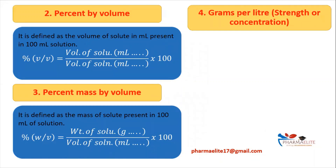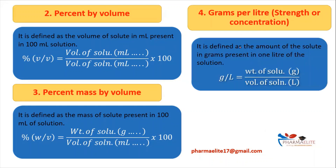The next term is gram per liter, also called strength or concentration of solution. It is defined as the amount of solute in grams present in one liter of solution. It is denoted as g/L or g·L⁻¹. The formula is weight of solute in grams divided by volume of solution in liters.